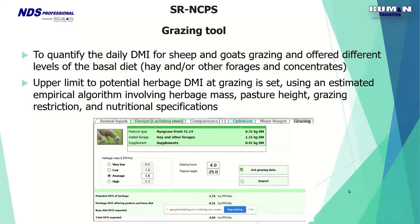Within NDS there is a grazing tool that quantifies daily dry matter intake for both sheep and goats grazing at different levels of the basal diet. This tool is continuously evolving because there are many available predictions for pasture intake in small ruminants, and the goal is to identify which works best for the intended purpose.